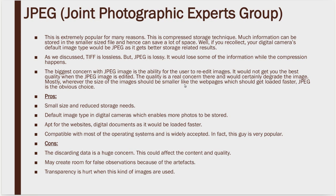The advantages of JPEG are many: it is small in size with reduced storage needs. The default image type is JPEG in almost all digital cameras and other devices that capture images. It is pretty much apt for websites where documents are getting loaded, and most importantly it is compatible with most operating systems. The cons: it discards data because you compress it, and this could affect the content and the quality. It can give you false observations — the moment you start compressing it, you start losing data, which creates false artifacts. You may perceive something that is not true in the image, and transparency is definitely hurt with this type of storage.